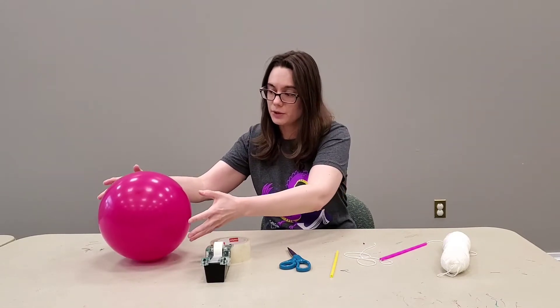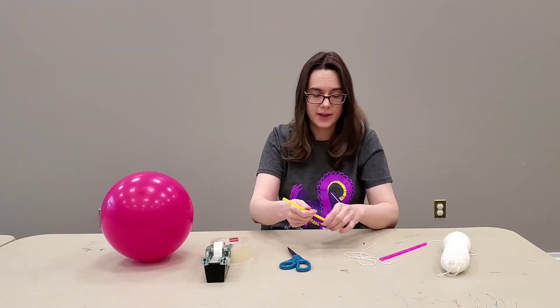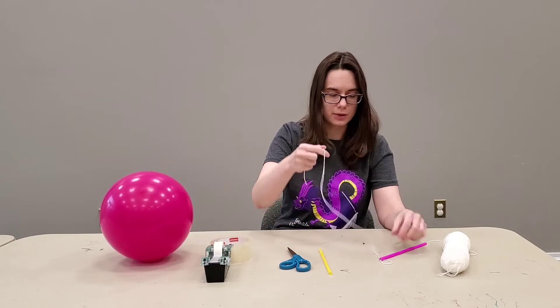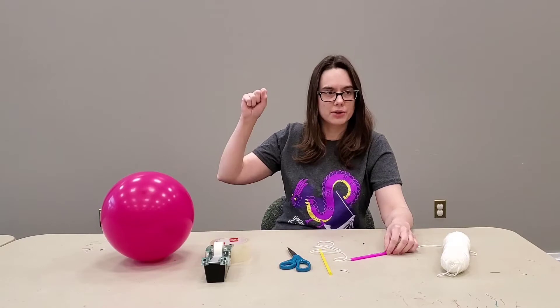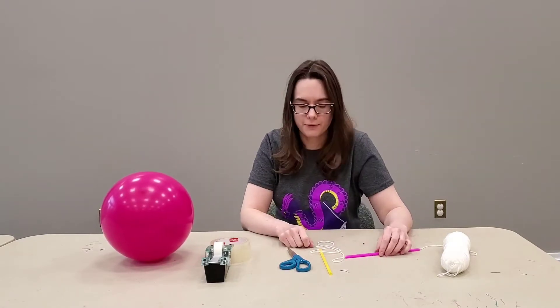You're going to tape your balloon to a straw and then thread it through the string, and then you're going to let the air out of the balloon and this is going to propel the balloon rocket forward.